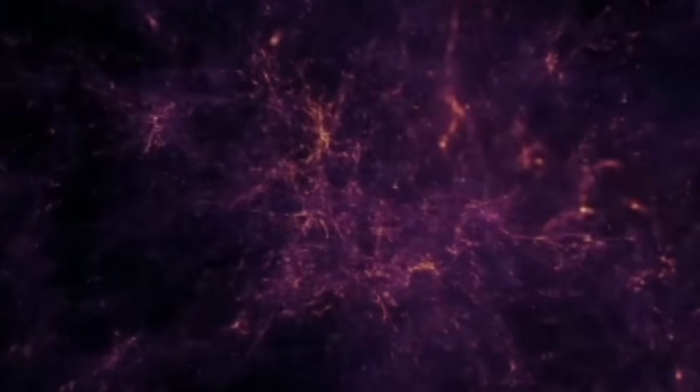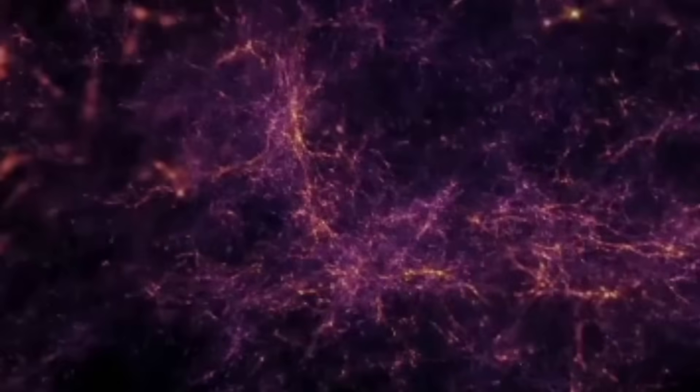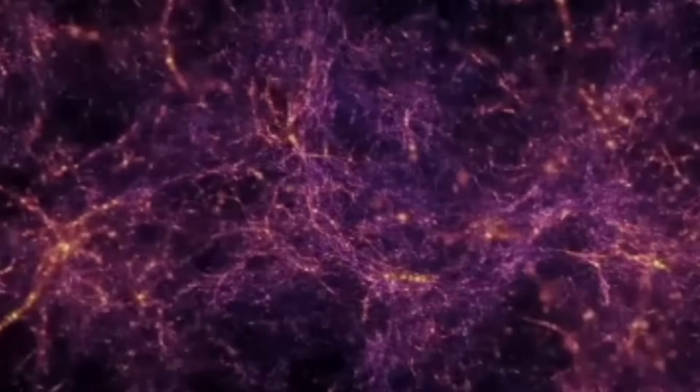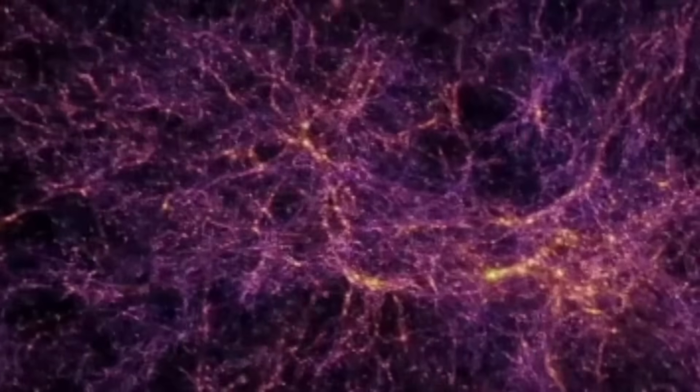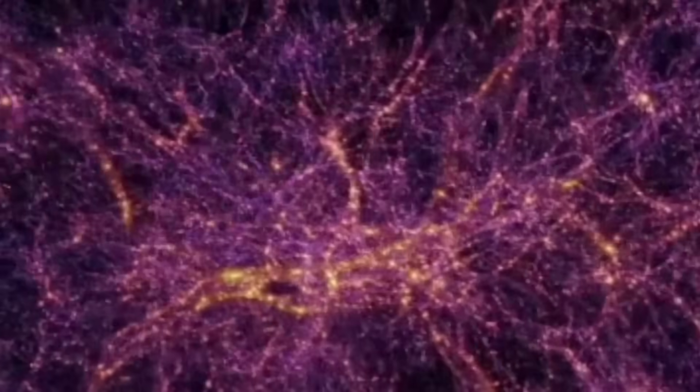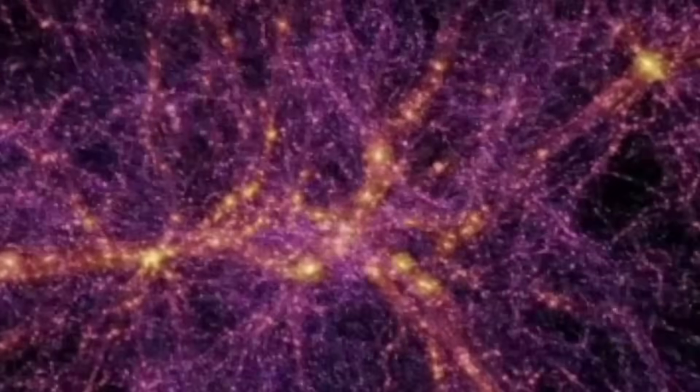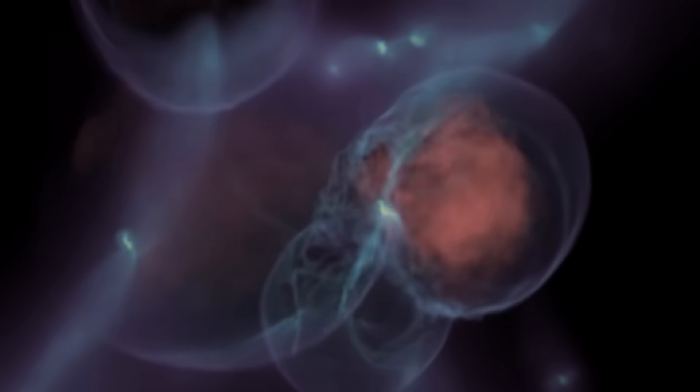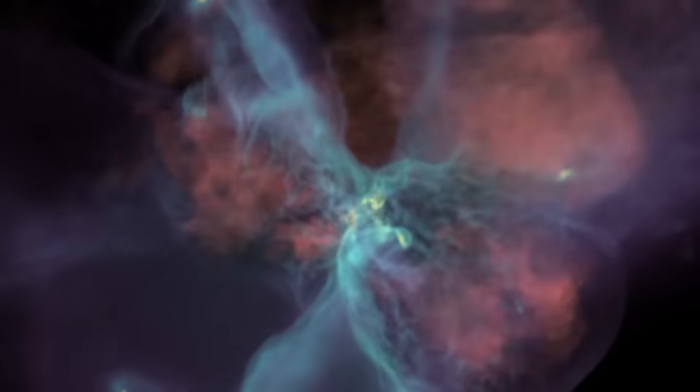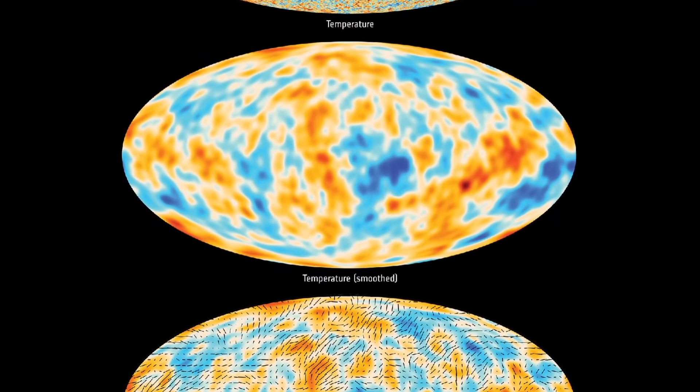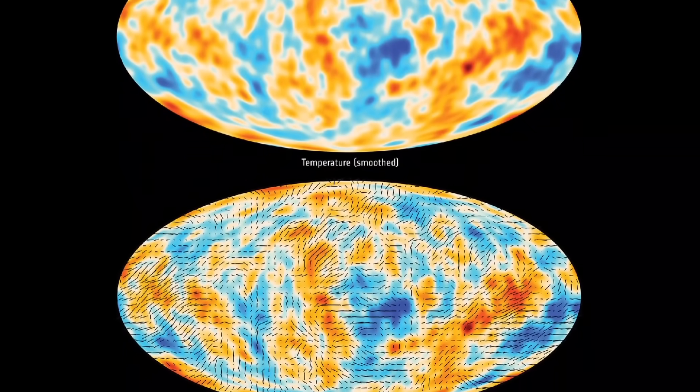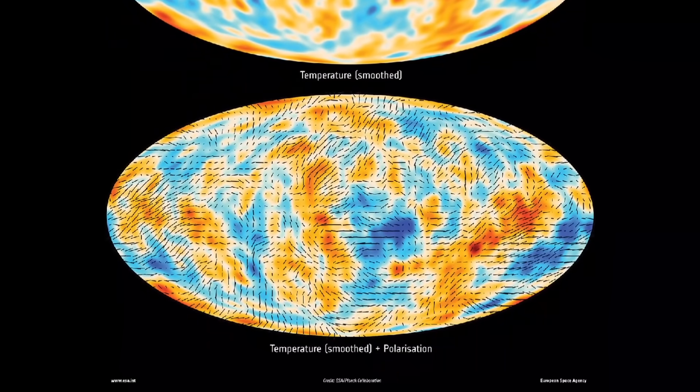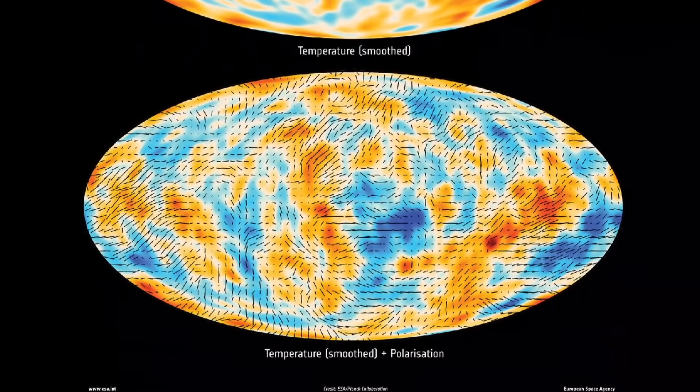Over billions of years, stars and galaxies began to form and grow inside these dark matter halos. Even the large-scale structure of the universe, the vast web of galaxies, clusters and cosmic filaments we see today, was shaped by dark matter. It acted like an invisible framework, helping normal matter clump together and form galaxies.